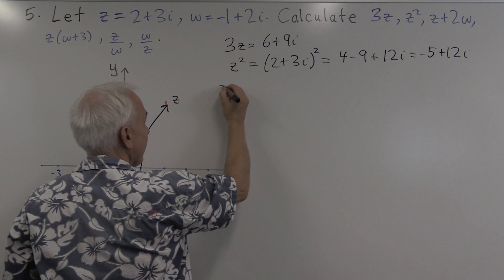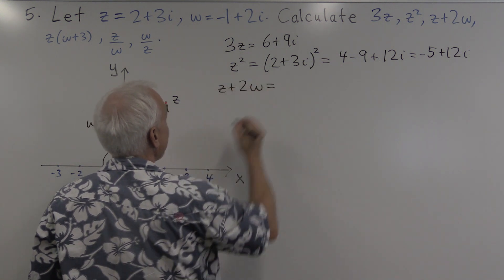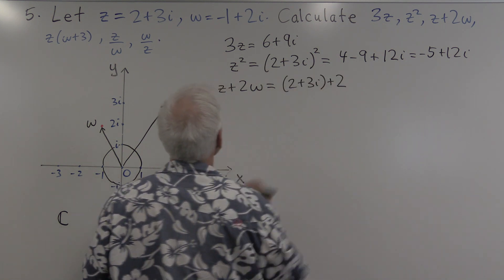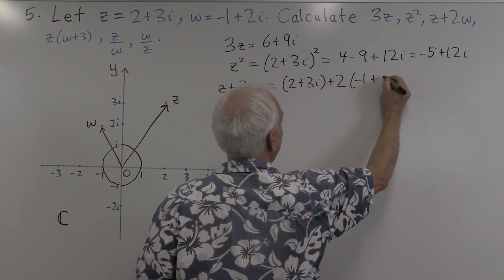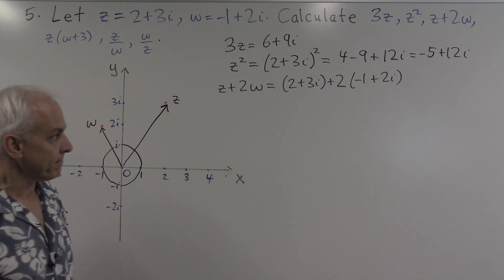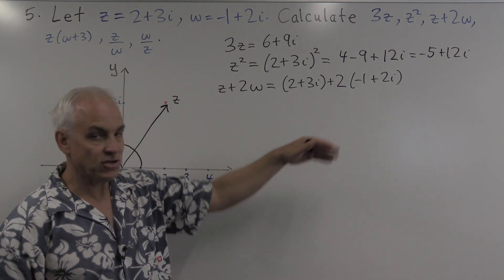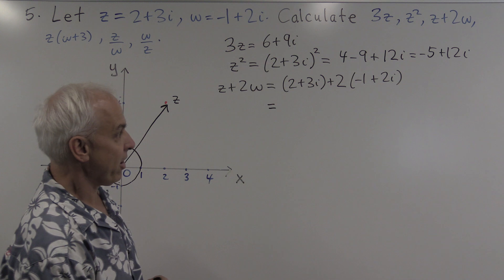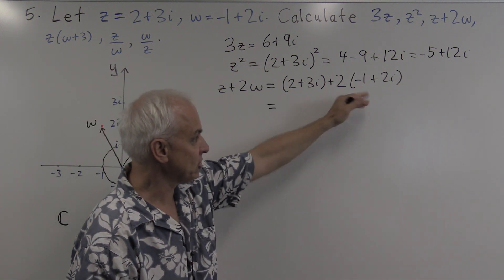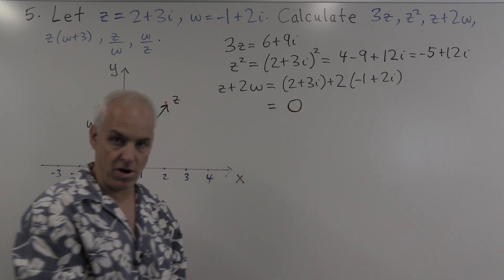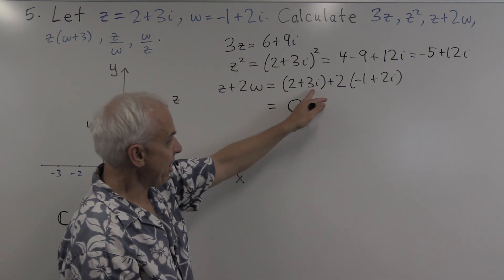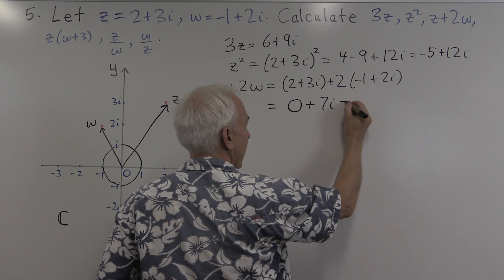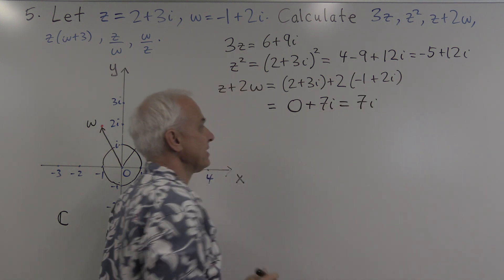How about z plus 2w? z is equal to 2 plus 3i, and we have to add 2 times w, which is minus 1 plus 2i. It's convenient to think about the real part and the imaginary part separately. The real part: there's a 2 contributing and a minus 2 contributing, so we get 0 for the real part. The imaginary part: there's 3i here and plus 4i for a total of 7i, which we can write more succinctly as 7i.